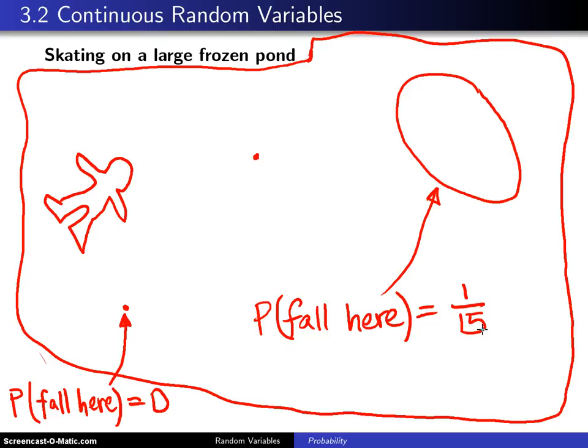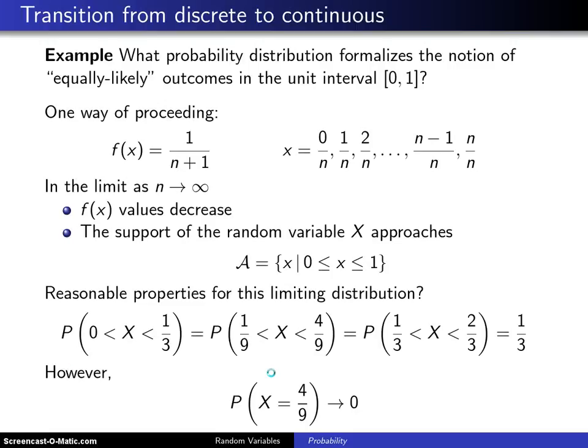The pond is a two-dimensional example, so to simplify this a little bit I'm going to go to a one-dimensional example. As a thought experiment, I'm going to ask the question: what is the probability distribution that formalizes the notion of equally likely outcomes on the unit interval [0,1]? So I'm only in one dimension right now. I've taken this unit interval and included zero and included one, and here is one way of proceeding.